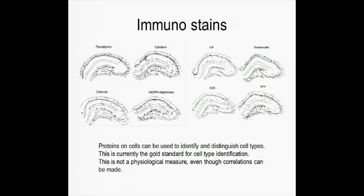Here is a picture of the hippocampus. I'm a little hippocampus-centric because that's where I work. Here are different proteins: parvalbumin, calretinin, NADPH-diaphorase, cholecystokinin, kinase, neuropeptide Y, somatostatin, and a vascular protein I forget the name of. You can see that these dots represent where the soma of those stained cells are located.